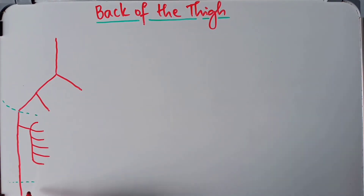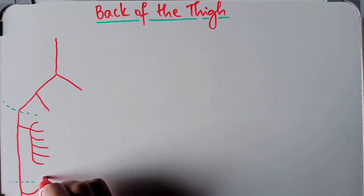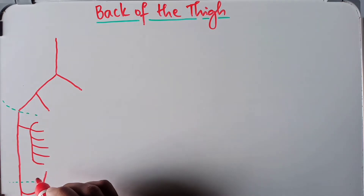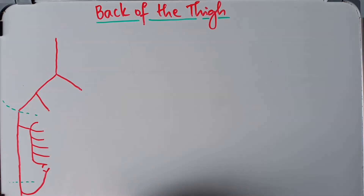From the popliteal artery we have one more branch known as the superior muscular branch. This superior muscular branch of the popliteal artery will anastomose with the fourth perforating artery.